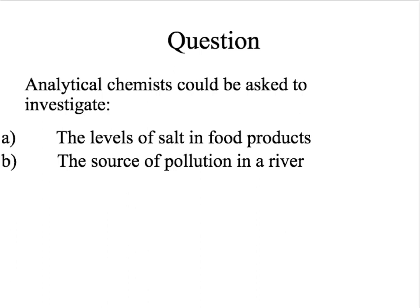Analytical chemists are chemists that study the different make-ups of chemicals. They could be asked to investigate the levels of salt in food products or the source of pollution in a river. For the levels of salt in a food product, they would need to use the quantitative analysis approach. In order to look at the source of pollution in a river, they would be able to use qualitative data to state exactly where the source of the pollution is believed to be.